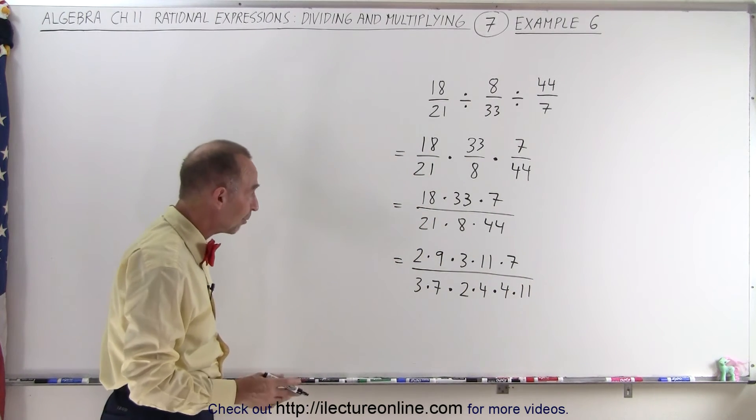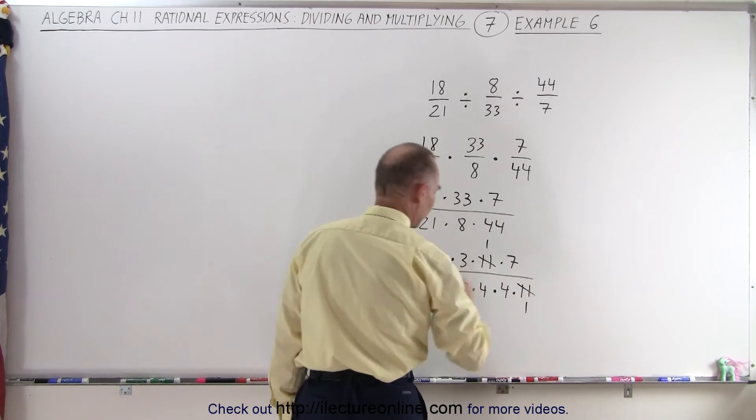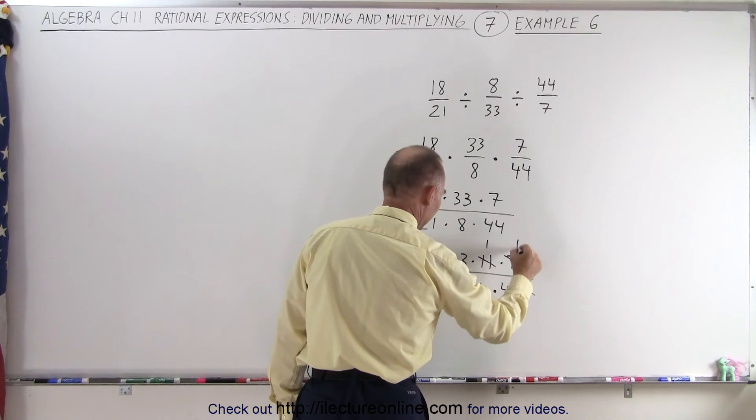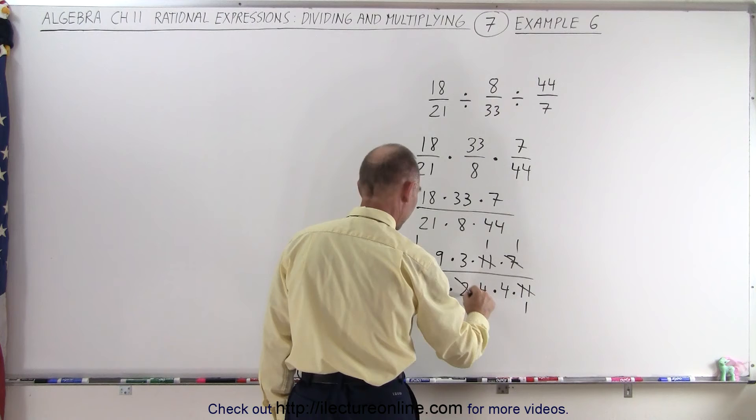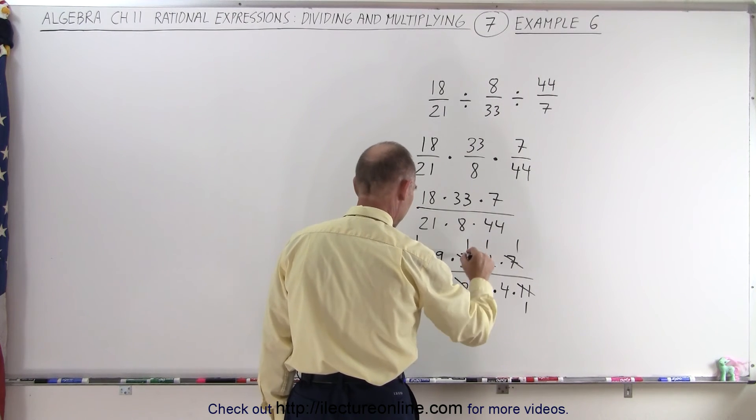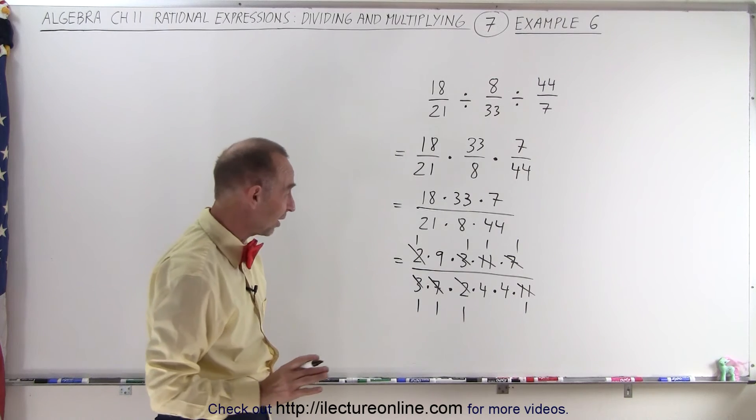Now let's have a little fun and simplify things as much as possible. The 11 is straightforward, we have a 7 and a 7, that simplifies, we have a 2 and a 2, that simplifies, a 3 and a 3, that simplifies, and I think that's as far as I can go,